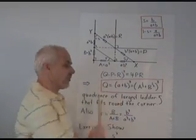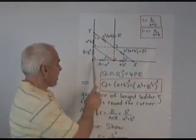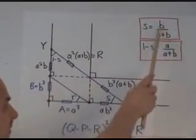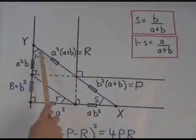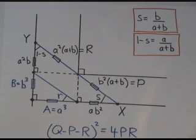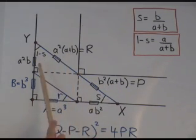Alright, now that we know what S is, we can fill out all the rest of the diagram pretty easily. So here's little a cubed, there's little b cubed, there's S which is b over a plus b. So 1 minus S over here will be little a over a plus b. And then you can easily just plug into the formulas that we've already got. That P, for example, is b squared a plus b. R is equal to a squared a plus b.